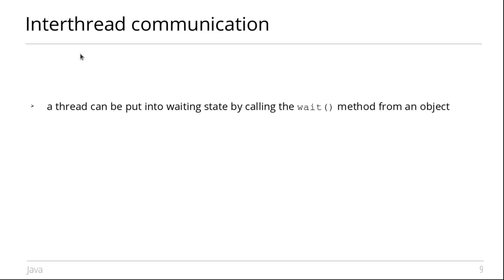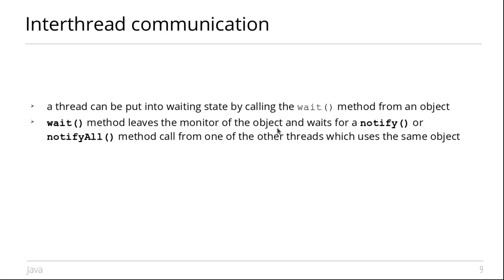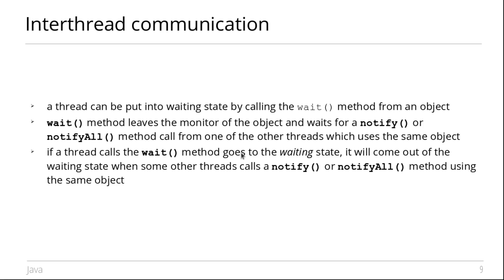One important thing is the wait method. A thread can be put into a waiting state by calling the wait method on an object. The wait method leaves the monitor of the object and waits for a notify or notifyAll method called from one of the other threads using the same object. If a thread calls the wait method and goes to the waiting state, it will come out when some other thread calls notify or notifyAll using the same object.